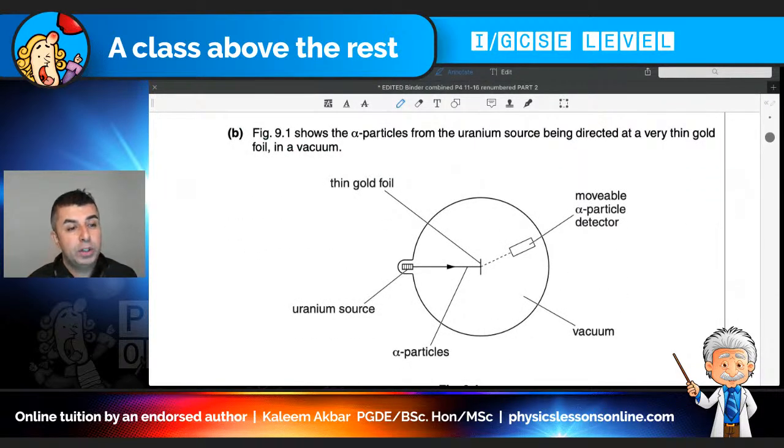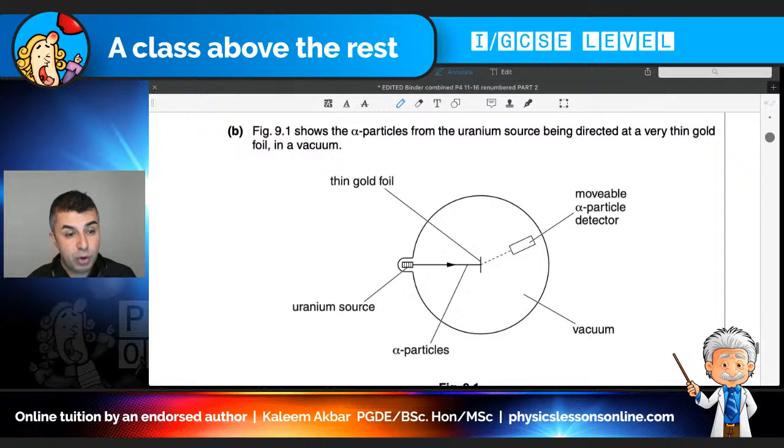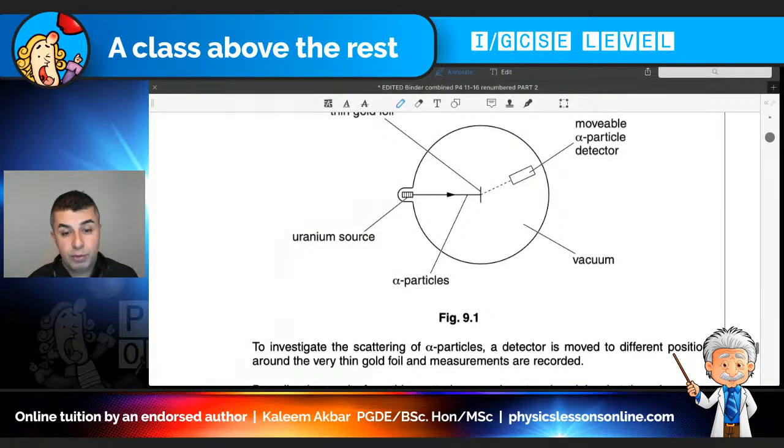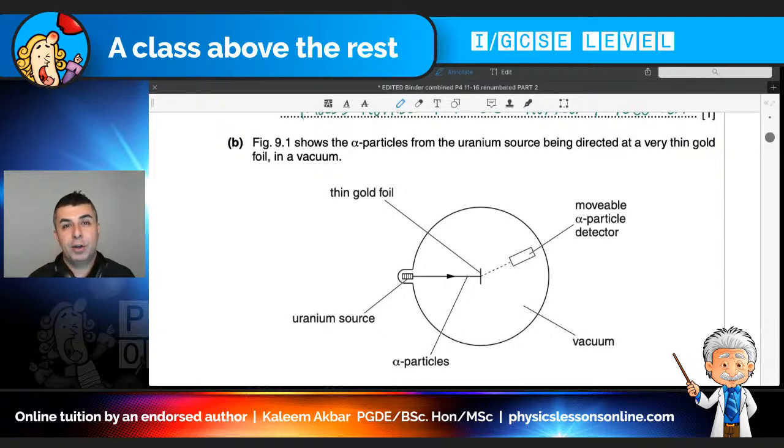Next, figure 9.1 shows the alpha particles from the uranium source being directed at a very thin gold foil in a vacuum. So here we've got the gold foil. Here we've got uranium source. We've got alpha particles and we have a movable detector, probably a Geiger-Müller tube. Now this is the main part of the question. What is this all about? It's about an experiment known as Rutherford Scattering Experiment. So what's going on here? We've got a radioactive source that's firing alpha particles at this gold foil in a vacuum. Why a vacuum? Because if you know a little bit more about this topic, alpha is the most ionizing radiation and it will not travel further than six centimeters of air approximately. So if we had air in here, the alpha particles wouldn't get very far. So it's important that it's a vacuum. So now all we have is this thin gold foil.